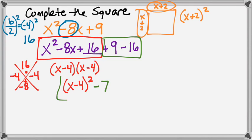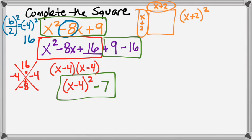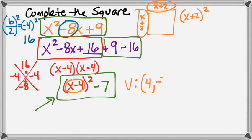So this is vertex form. The red part in x squared minus 8x plus 16 turns to x minus 4 squared, and then on the outside we have 9 minus 16 which gives negative 7. So I changed x squared minus 8x plus 9 into vertex form: x minus 4 squared minus 7. Now I know the vertex: do the opposite of what's with x, so positive 4, and the y part is negative 7. Vertex is (4, negative 7).